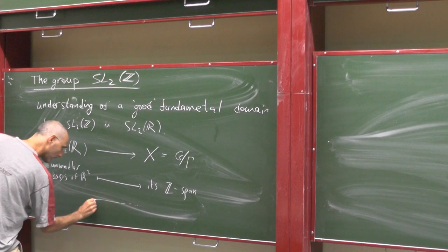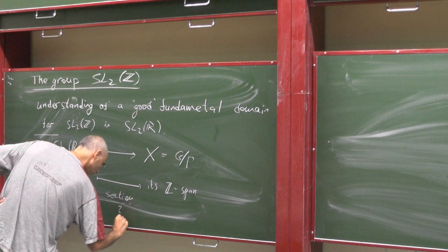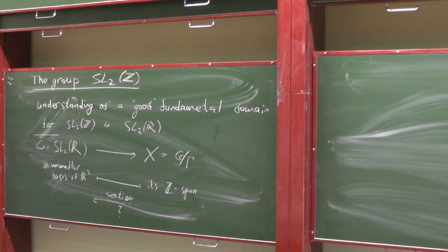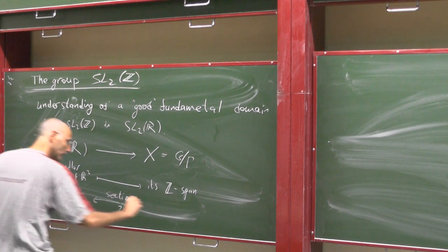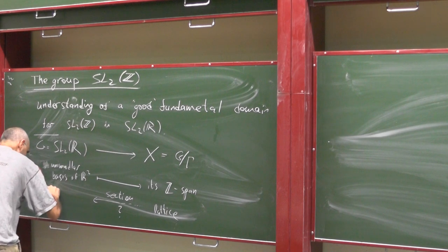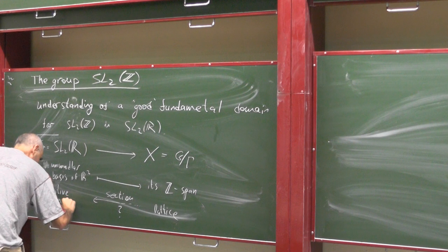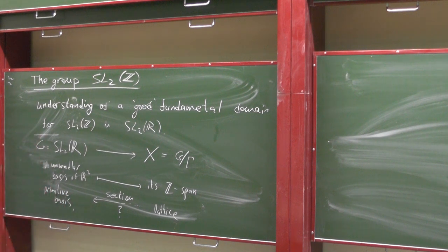Now I want a section of that. If you give me a lattice inside R2, you want to find a primitive vector. This is a lattice to a primitive basis in it. This is what I'm trying to do.